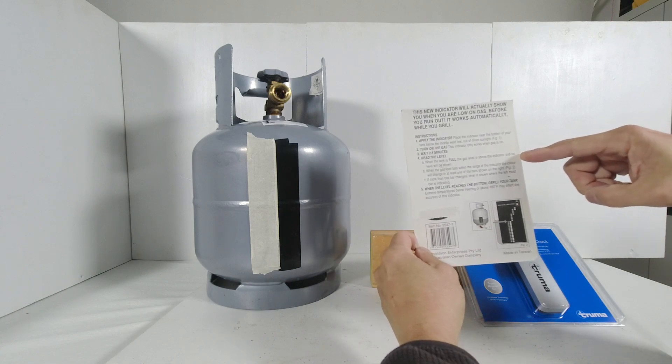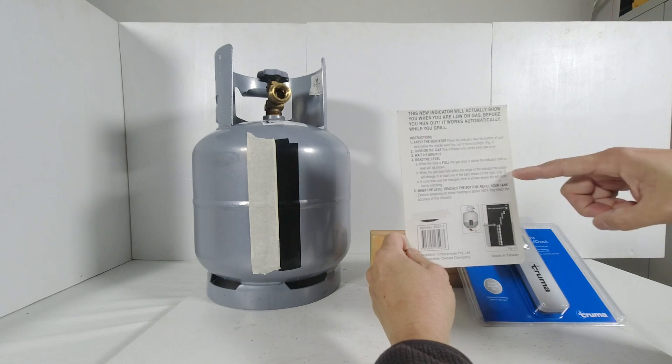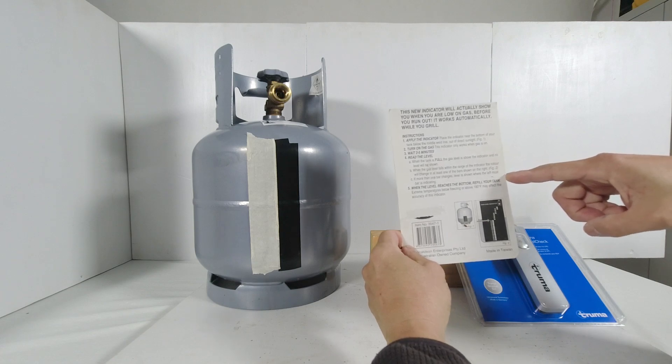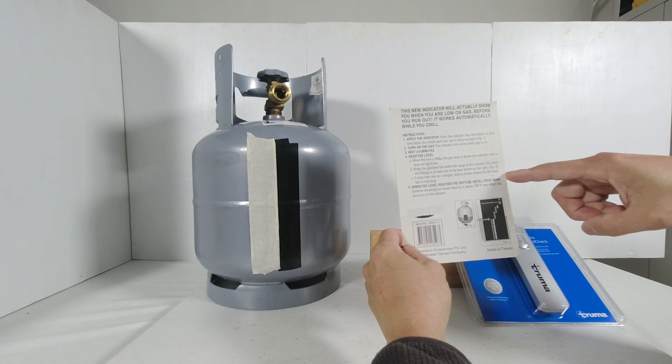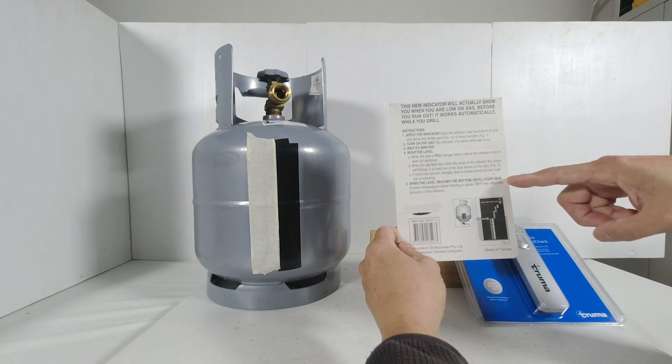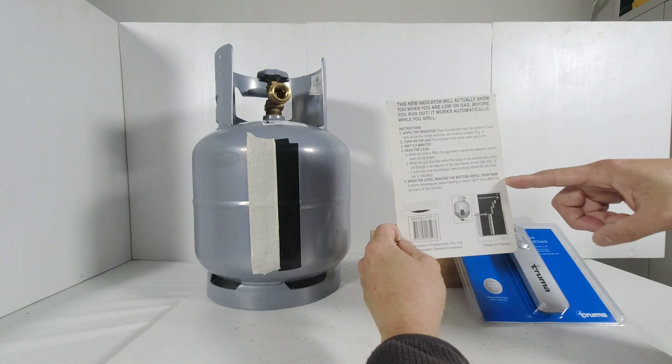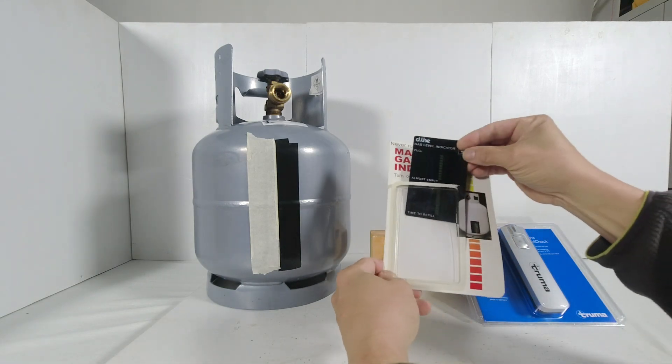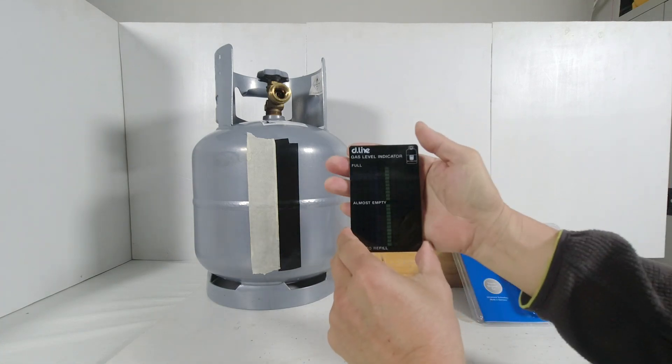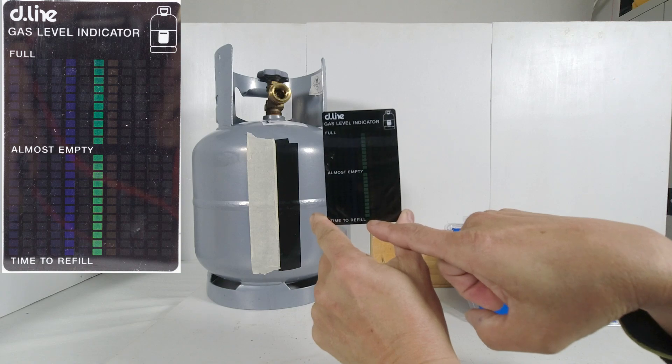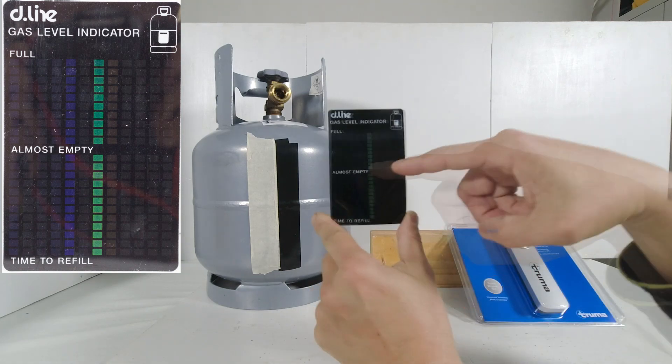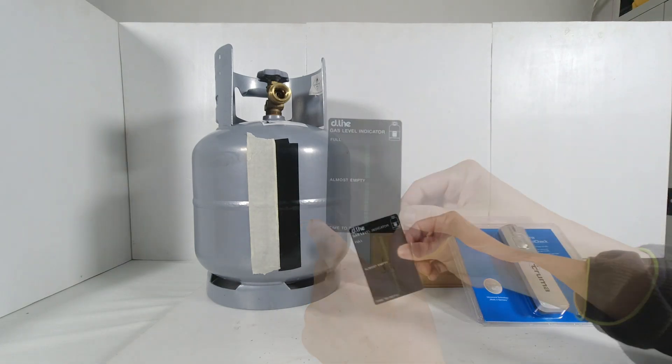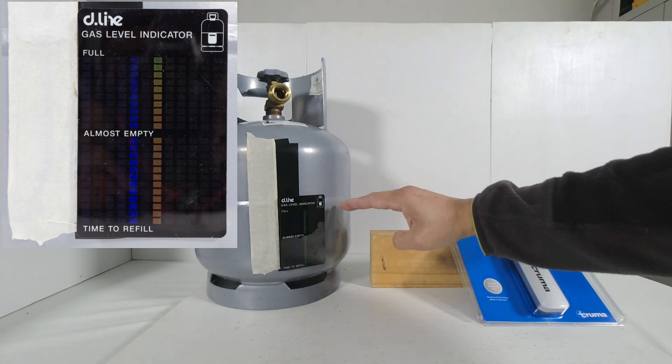When the tank is full, the gas level is above the indicator and no level will be shown. When the gas level falls within the range of the indicator, the color will change in at least one of the bars. If more than one bar changes, the level is shown where the leftmost bar is indicating. When the level reaches the bottom, refill the tank. Extreme temperatures below freezing or above 100 degrees Fahrenheit may affect the accuracy of this indicator. So place the magnetic indicator strip here below the weld line.